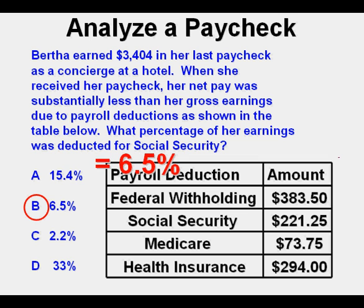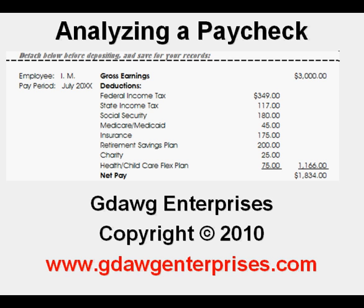If you have had experience with your own paycheck you might have already been able to pick out B as the most reasonable answer even before calculating. If you got answer A, that would be because you probably divided 3,404 by 221.25 — be careful. Always remember what percentages really are. This has been Analyzing a Paycheck. Thanks for viewing.